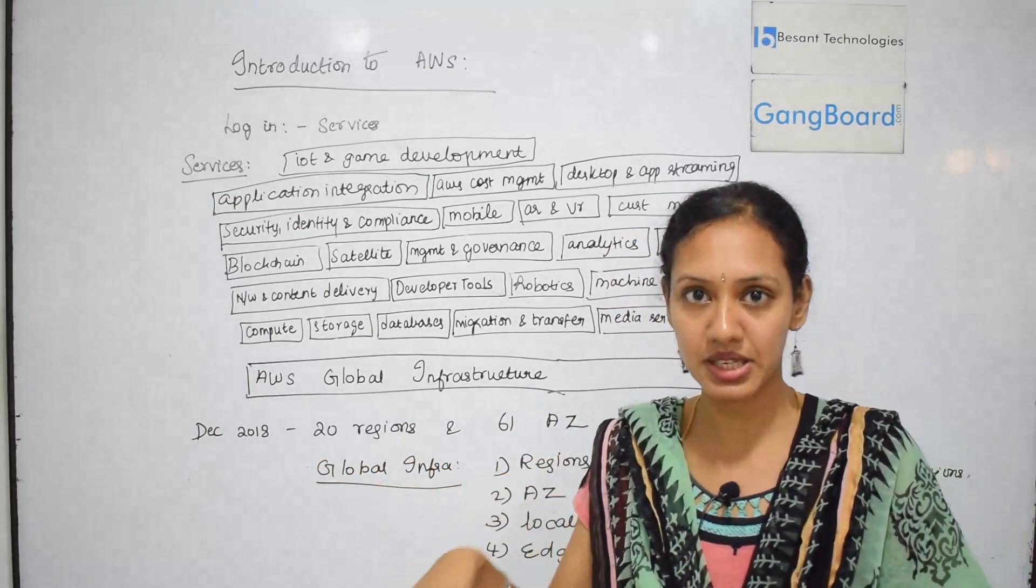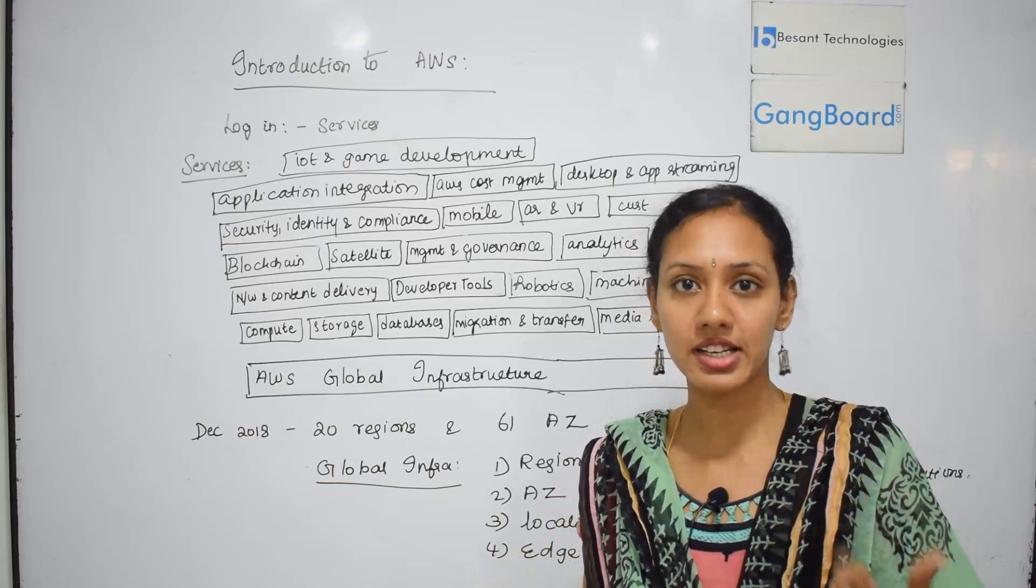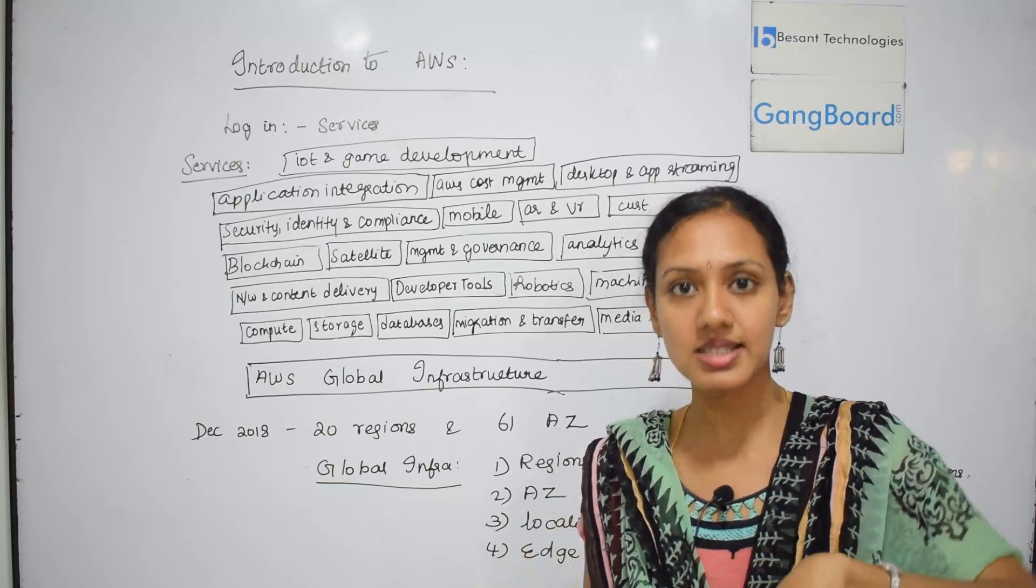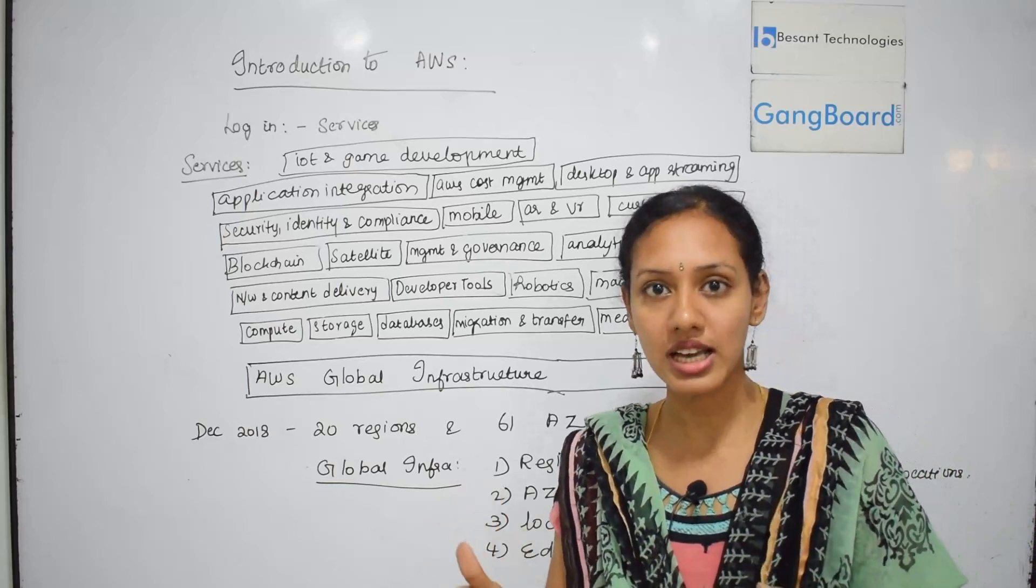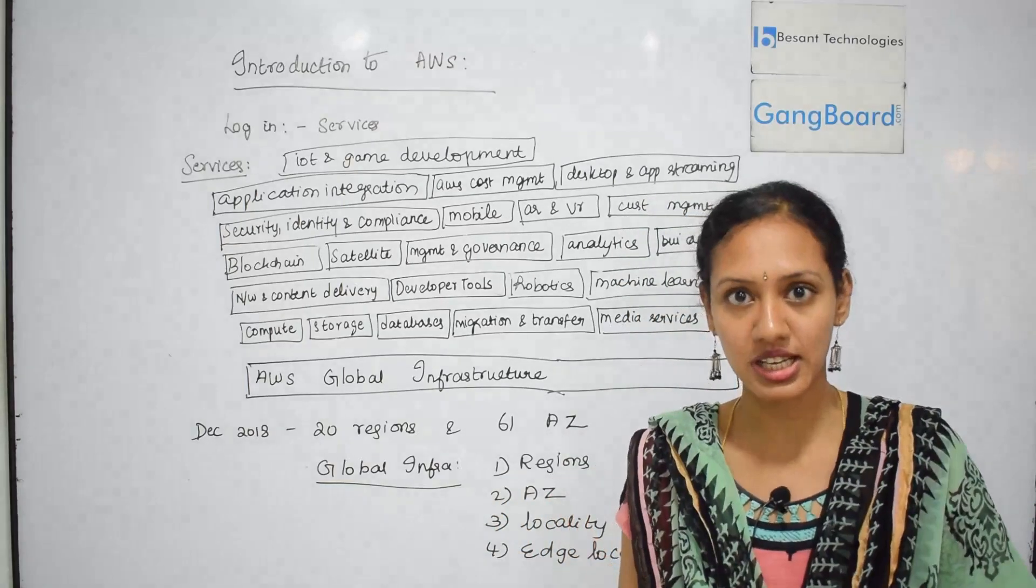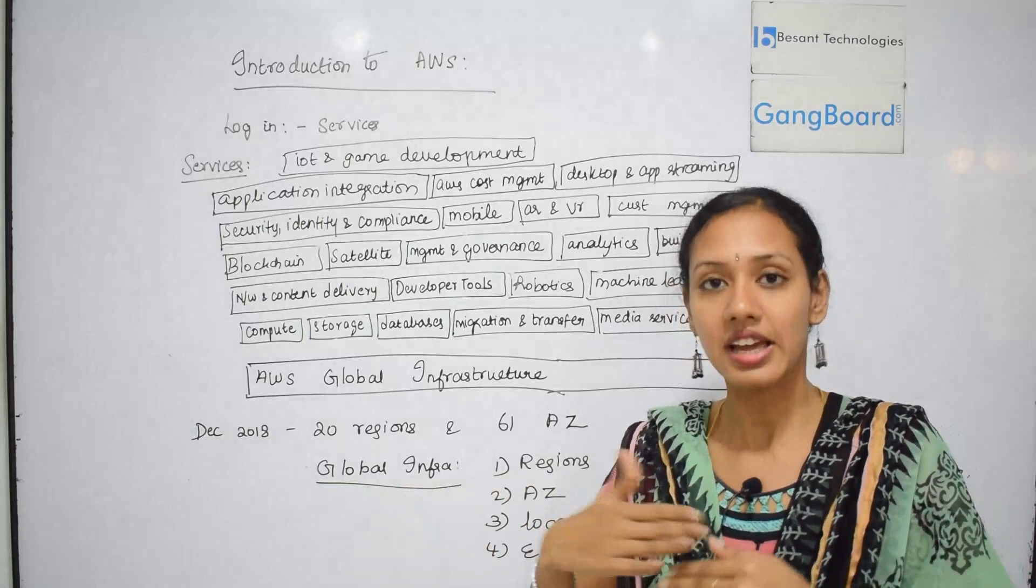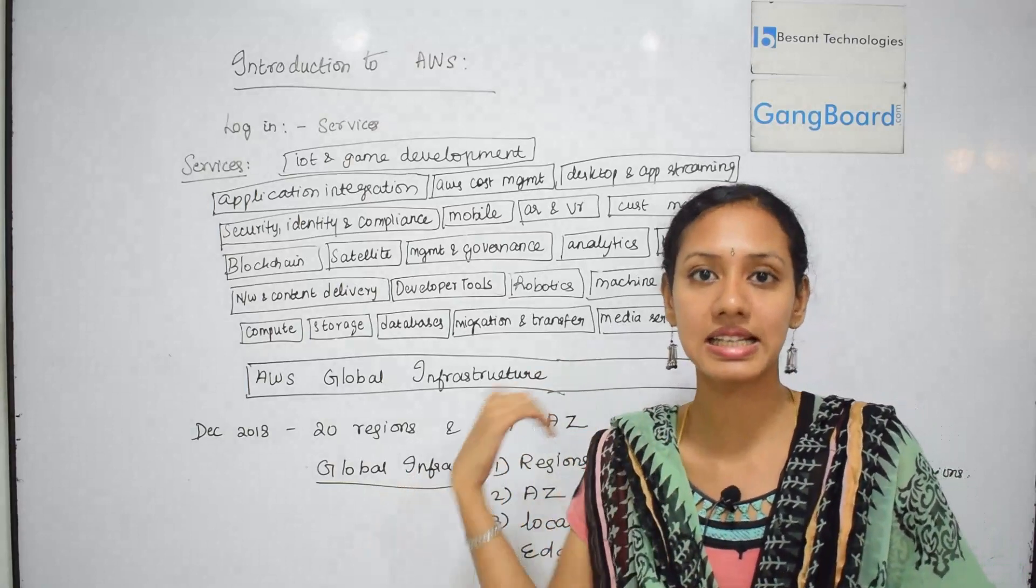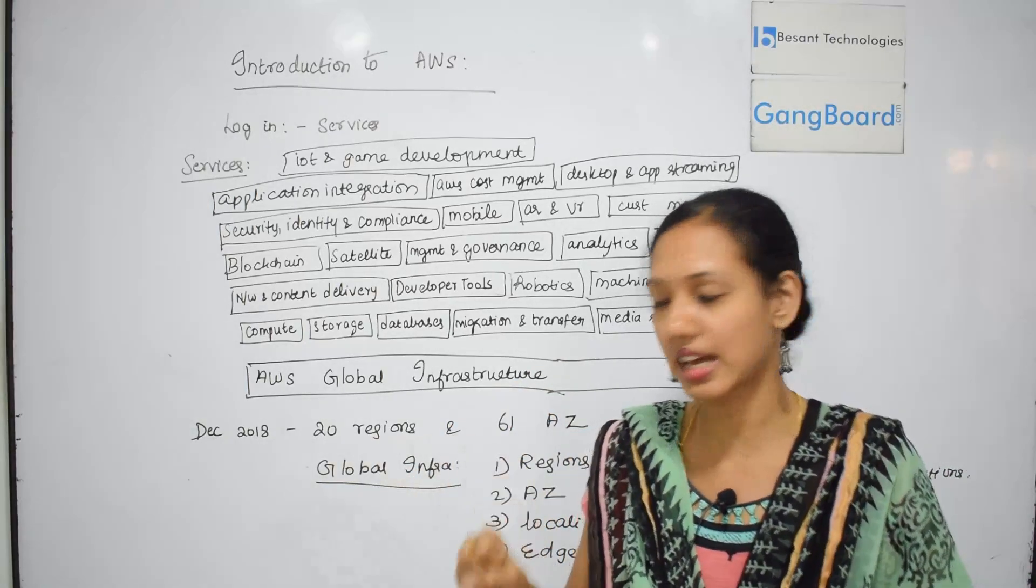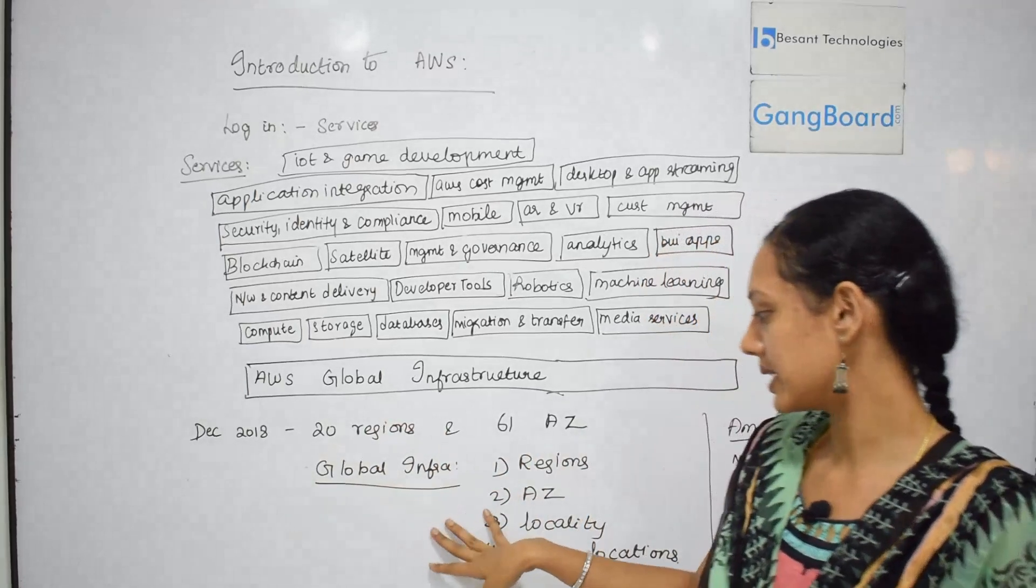These availability zones are not dependent on each other, which means they are independent of each other. They are not connected, so what happens in case there's a natural calamity and there is one availability zone failure? If they are connected to each other, it's going to be a problem. So automatically, the next availability zone will take up the resources.